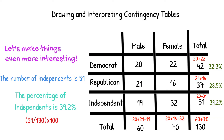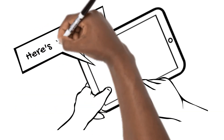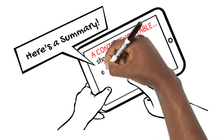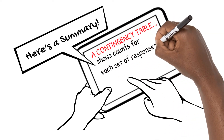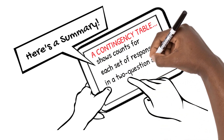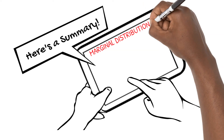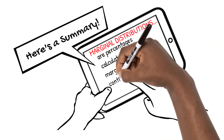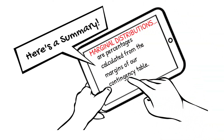We could also focus on the margin at the bottom to see the percent of males and females surveyed. Here's a summary of what we've learned: A contingency table shows the counts for responses of a two-question survey. Marginal distributions are percentages calculated from the margin of our contingency table.